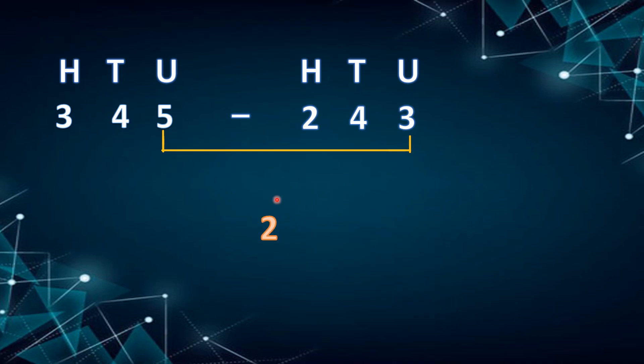Tens place number with tens place number — that is 4 minus 4. 4 minus 4, we get 0. Where should we write 0? Before units place is tens place, so we write 0 here.